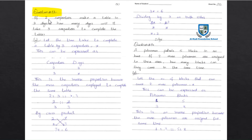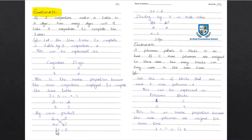For inverse proportion, 2 is to 3 equals x is to 3. Writing as fractions: 2/3 proportion x/3. By cross product rule: 3 × x = 2 × 3, so 3x = 6.